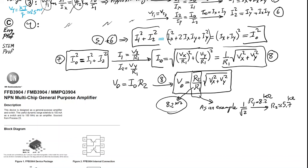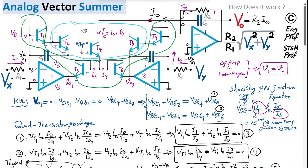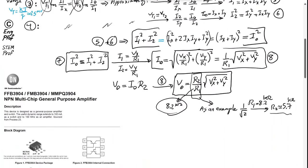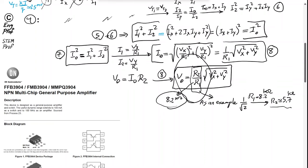R2 can be implemented as a digital potentiometer — a digitally controlled resistor available from Analog Devices, Texas Instruments, and others, sourced from DigiKey or Mouser. This allows precise setting of the R2/R1 ratio to whatever value is needed.